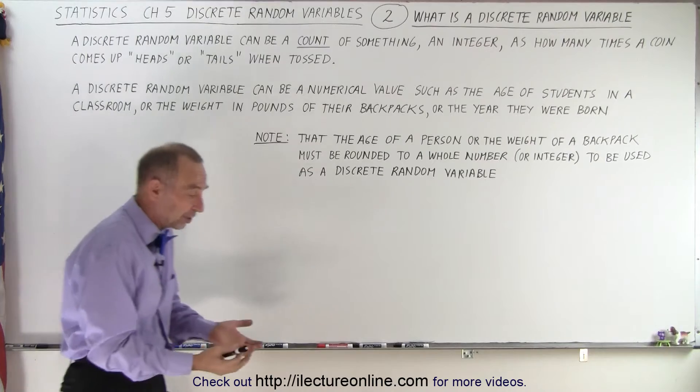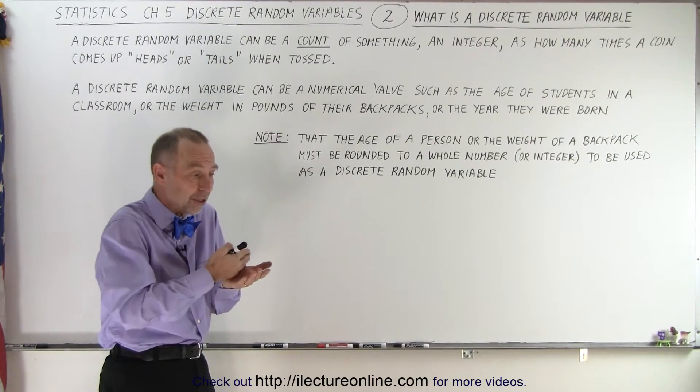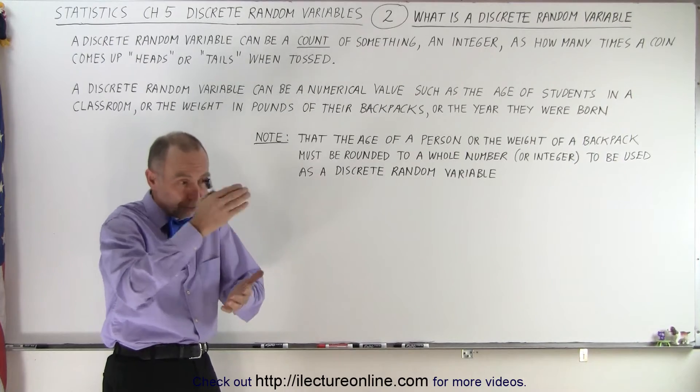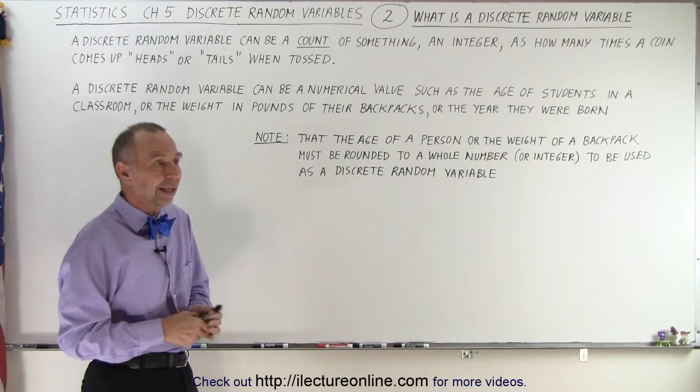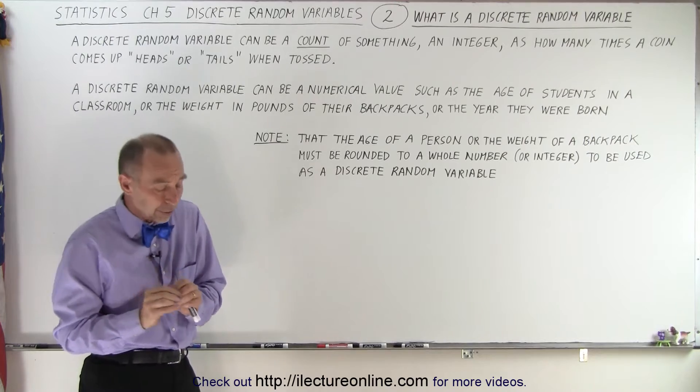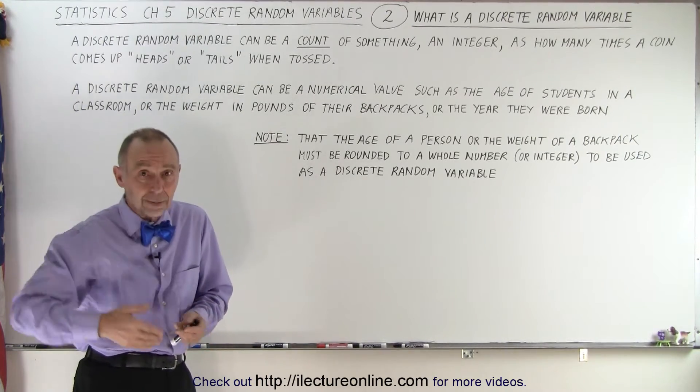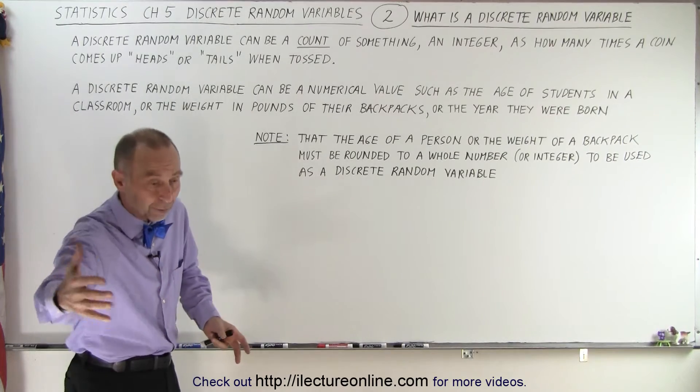Because if you step on a scale, a very accurate scale, it could give you a decimal - let's say 160.1235 pounds. And even that last decimal place isn't exactly accurate. It's only as accurate as the scale. Maybe a more accurate scale could give you more decimal places.